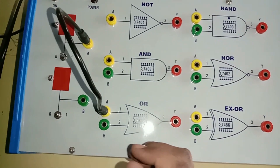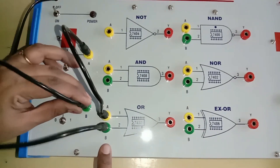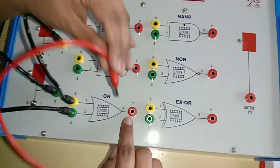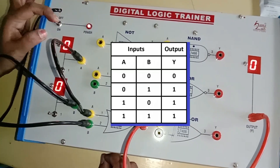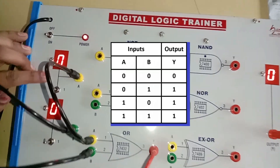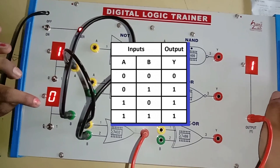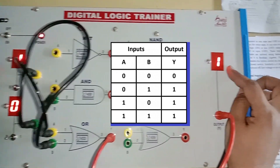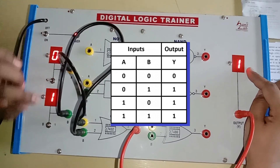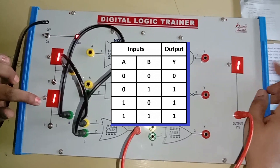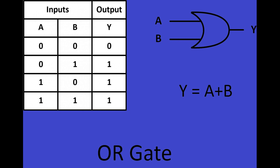Next we will move on to OR gate. Terminal 1 and 2 of OR gate are given to inputs A and B. Terminal 3 is connected to the output. Now turn on the kit. With inputs 0,0 the output is 0. With input 1,0 the output is 1. With input 0,1 the output is 1. With input 1,1 the output is 1. Thus the OR gate is verified.